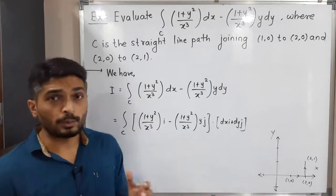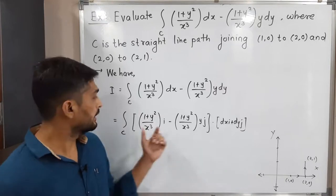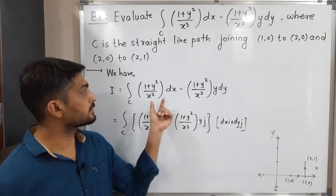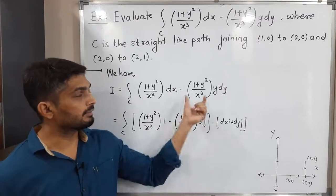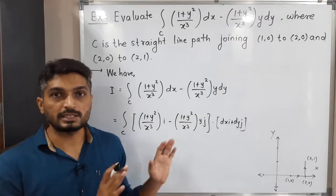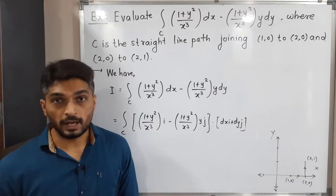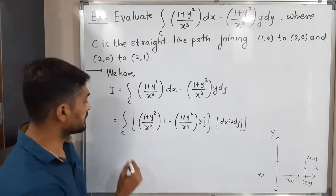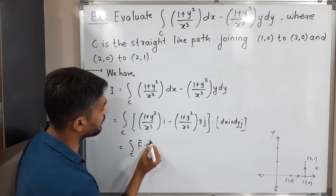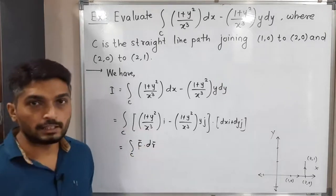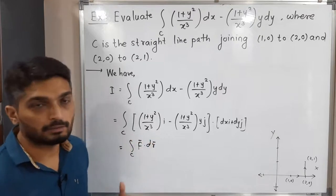The first bracket into dx gives the first term, and this bracket into dy gives the second term. So I have expressed it in this way — the first bracket we will call f-bar and the second is nothing but dr-bar. So this is equal to integration over c of f-bar dot dr-bar. That's why you can easily see the first bracket is nothing but our f-bar.